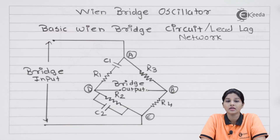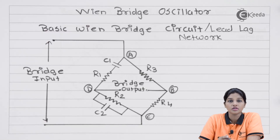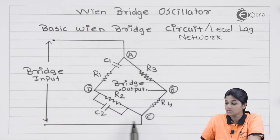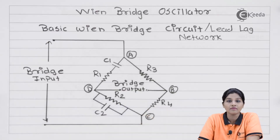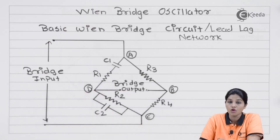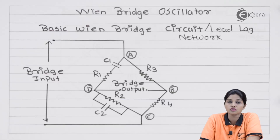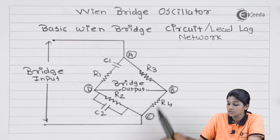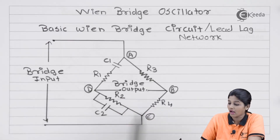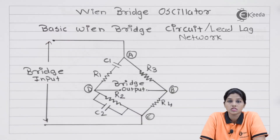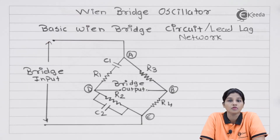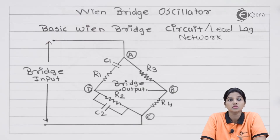Now let's see the circuit used as a feedback network — the Wien bridge oscillator circuit. The Wien bridge circuit consists of four arms: AB, BC, CD, and AD. The arm AD has a series combination of resistor R1 and capacitor C1, whereas arm CD has a parallel combination of R2 and C2. Arm CD is called the frequency-sensitive arm because its components decide the frequency of oscillations. Arms BC and AB consist of resistors R4 and R3, which generate a reference voltage that remains constant.